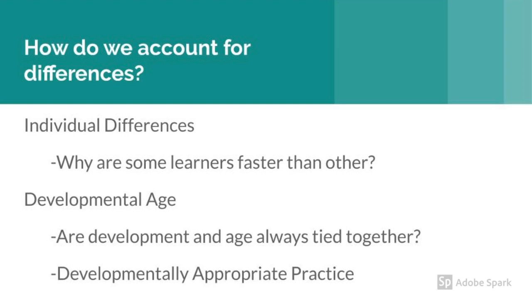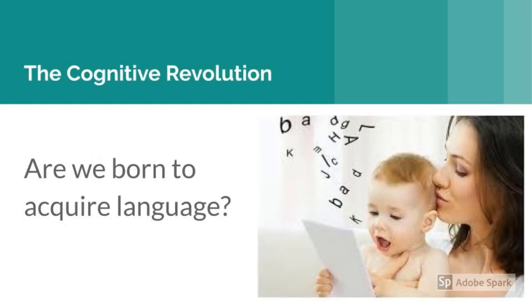Theories of how children develop need to account for the differences that we see in children's development. This leaves us with a few questions: why do some children learn faster than others? We also see that age and level of development are not always aligned. An example of this is how some children will enter kindergarten and can already read basic words and write the alphabet, while others struggle to do these tasks by the end of kindergarten. Some of these questions brought about what is known as the cognitive revolution, where some existing theories have been modified and redefined.